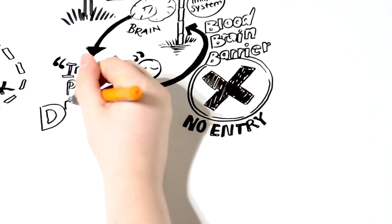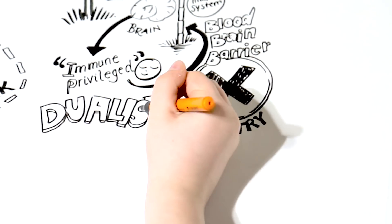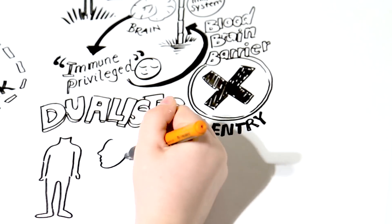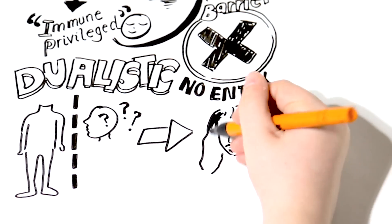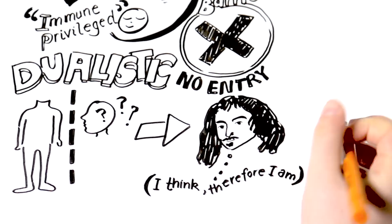This is a concrete example of the dualist way of thinking, originally proposed by Descartes, which divides each human being into two very different and separate things, the body and the mind.